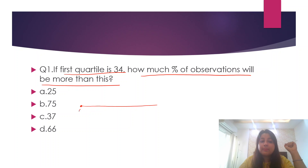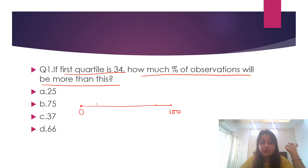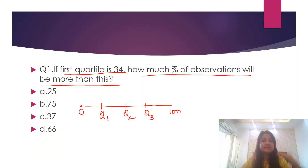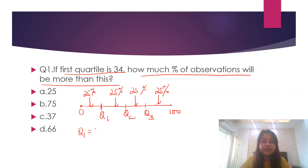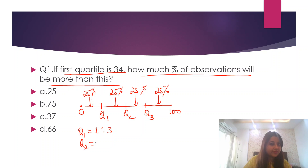Quartile simply means you are dividing your data set into four equal parts. Suppose I have a data set from 0 to 100. My quartiles Q1, Q2, and Q3 are going to divide this data set into four equal parts — each of 25%. So Q1 divides the data set in a ratio of 1:3. Q2 divides it exactly 50% to the left and 50% to the right.